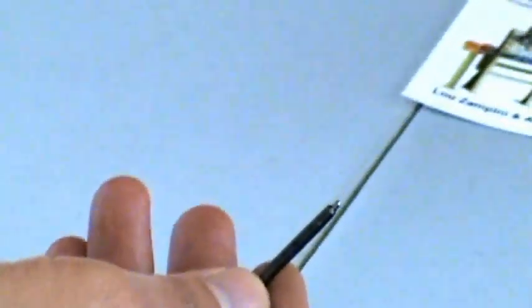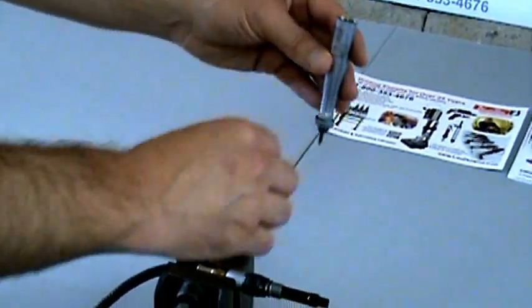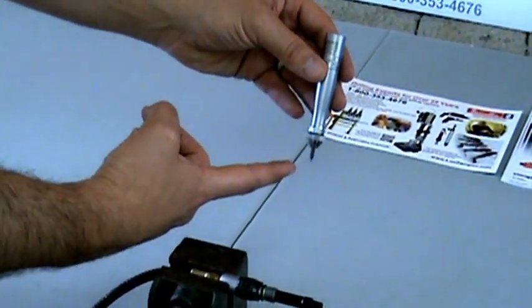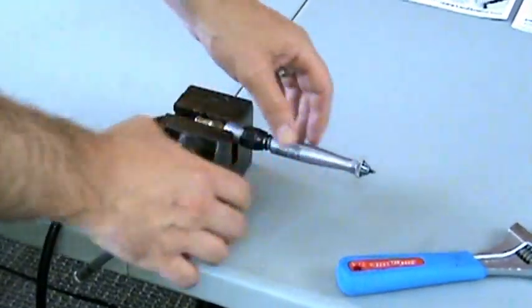Take the body of the tool, tilt it up, and then take this stylus and drop it in nose first. Give it a little shake to make sure it's all the way down. And then just simply screw it right back onto the tool.